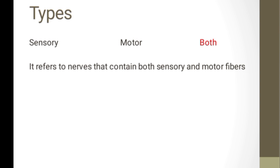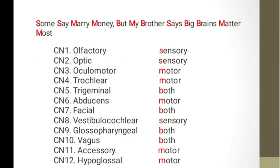And lastly, we have both sensory and motor — nerves that contain both sensory and motor fibers. Let us memorize the types of cranial nerves using a mnemonic: 'Some say merry money, but my brother says big brains matter most.' S stands for sensory, M is motor, and B is both.